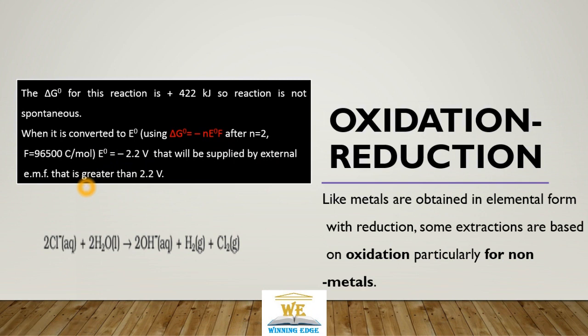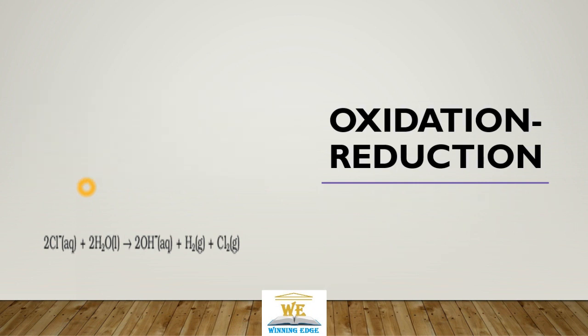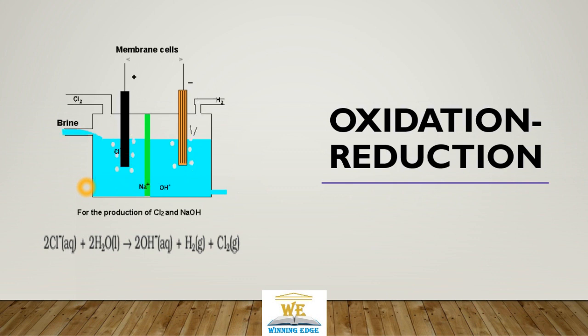Using it, we oxidize chloride to chlorine. This is brine - nothing but saturated sodium chloride solution. Hydrogen goes to the cathode, chlorine goes to the anode.